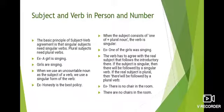When the subject consists of 'one of' plus a plural noun, the verb is singular. In some sentences, the phrase 'one of' is used, followed by a plural noun, but the verb remains singular. Example: 'One of the girls was singing.' Here, 'one of the girls' starts with a plural noun 'girls', but the verb 'was' is singular.